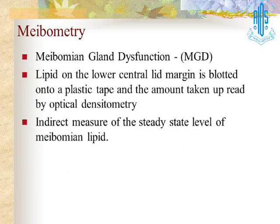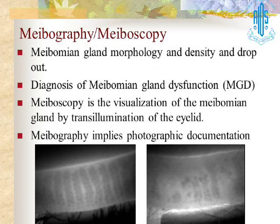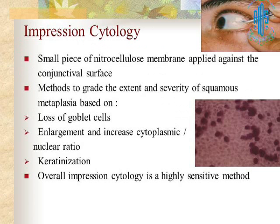Meibometry is basically to analyze the meibomian glands — it's an indirect measure of the steady state level. Meibography will tell us about the structure of the meibomian glands. Impression cytology is again a very important tool, especially important in patients with ocular surface disorders.